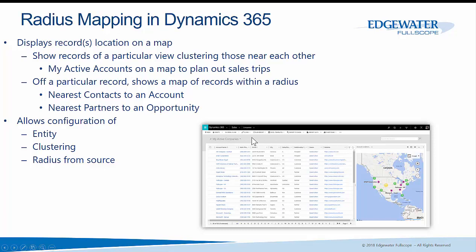In this screenshot we can see in Dynamics 365 we're looking at the active companies view and we have our radius map showing all of our accounts clustered — 15 accounts in the Colorado area, seven and two on the west coast — so we can see the distribution among our accounts.